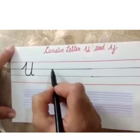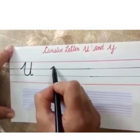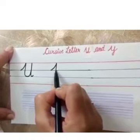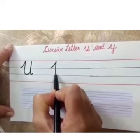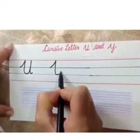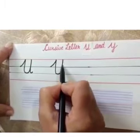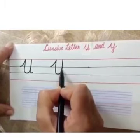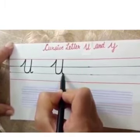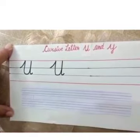Once more. Start from there, then move down, then up, then come back, and then end it with a little curve. This is letter U.